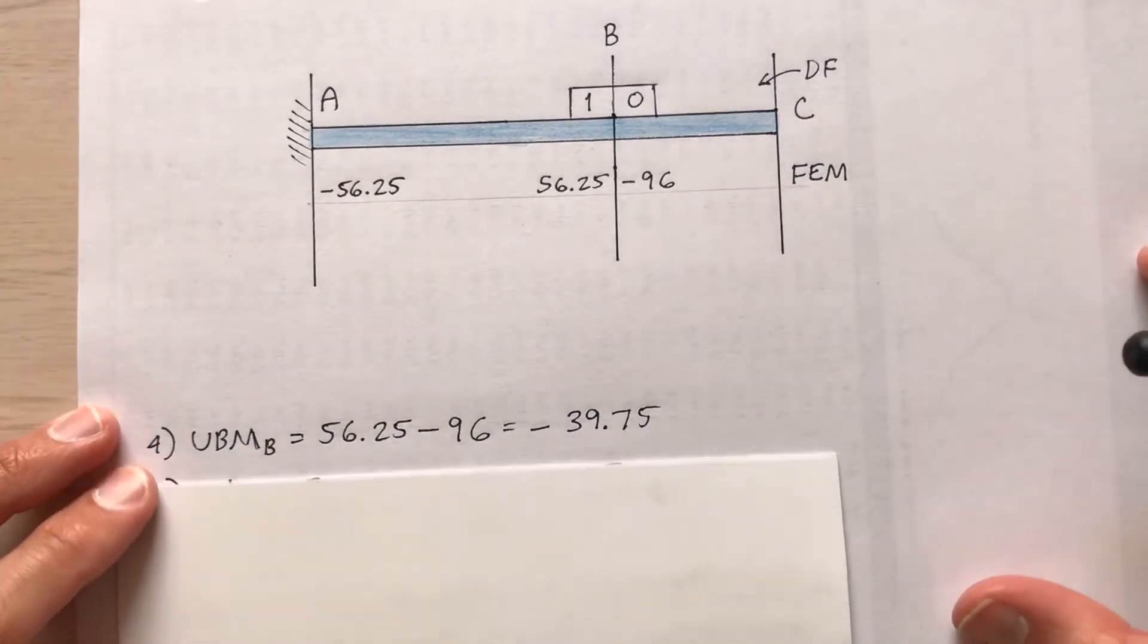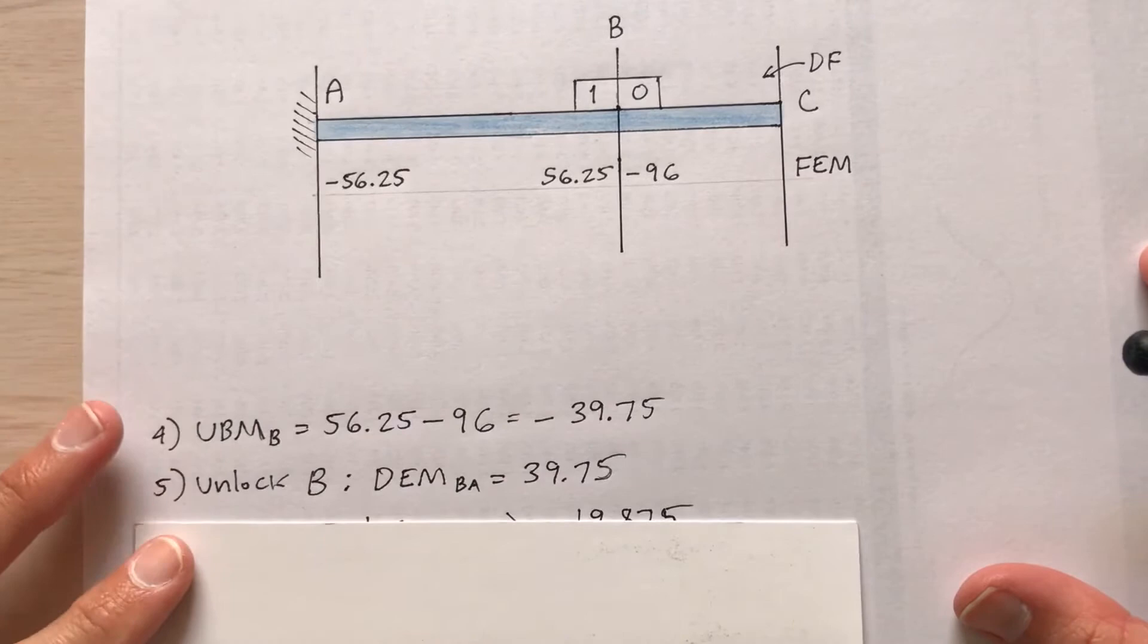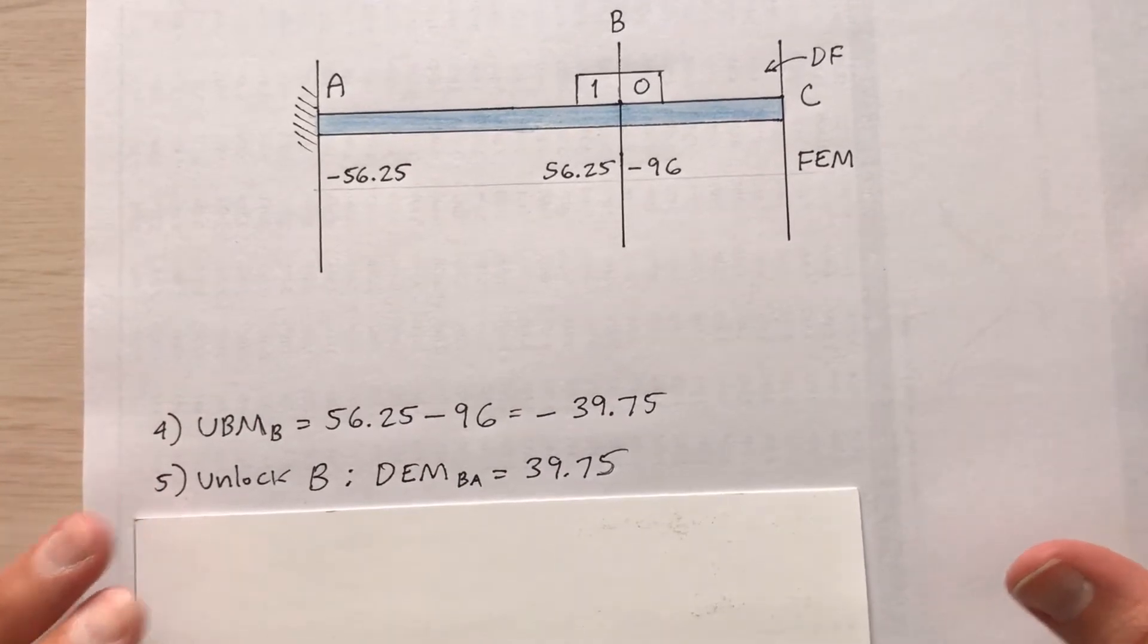Step five, unlock B. So the distributed end moment 39.75. We take the opposite sign. Remember that from my previous videos.